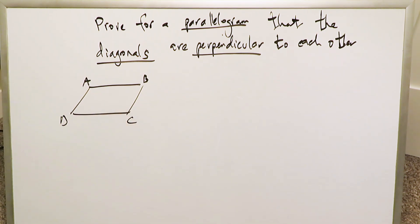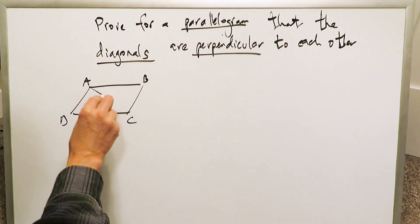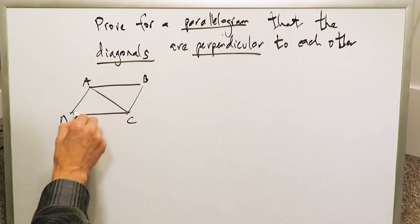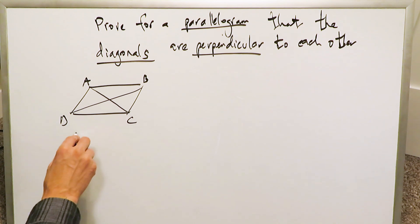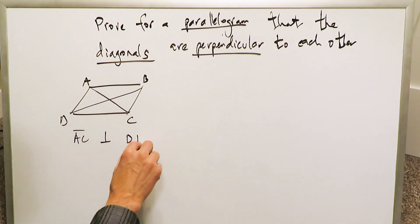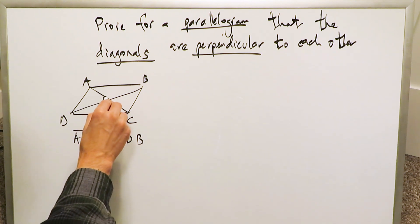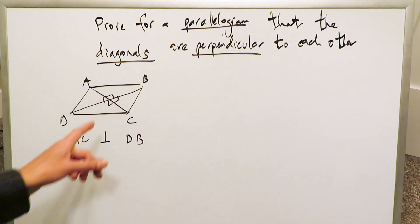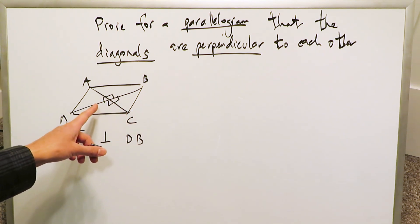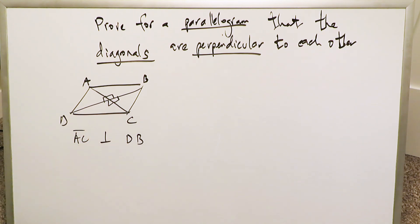If you were to draw in this parallelogram two diagonals, one from A to C and then the other one from B to D, you can say segment AC should be perpendicular to segment DB or they would meet each other here at 90 degrees. It may not look like 90 degrees to you over here based on the drawing, but it should be the case.